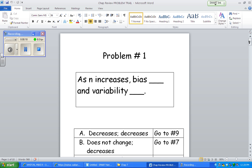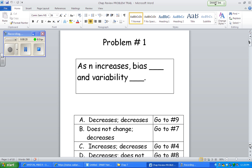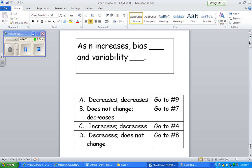Definitely the variability decreases if you have bigger sample sizes, but the bias is just really not affected. So the answer here would be B. The bias doesn't change. It doesn't matter how many people you have in your sample size, you're still going to have bias. So the answer is B. It does not change, and then the variability will decrease.